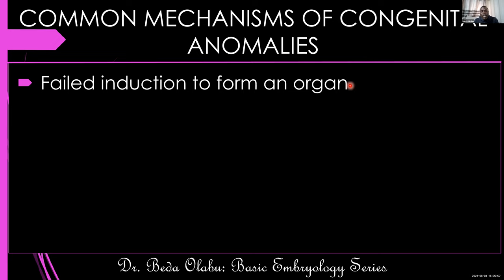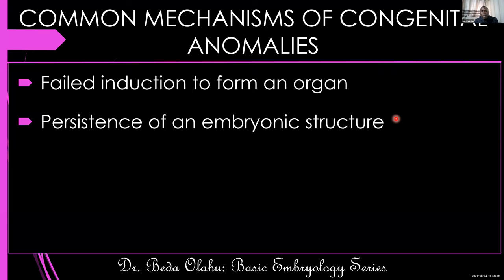An organ may not be induced to form and may be absent. You may also have malformations due to persistence of an embryonic structure — you should now be familiar with this. For example, if the yolk sac persists we get Meckel's diverticulum. If the primitive streak persists we may get teratomas. So if an embryonic structure persists you can get some malformation.